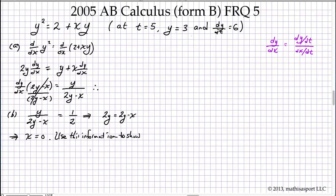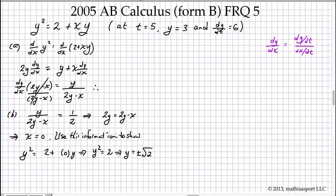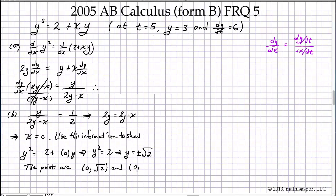We use this information back in the original equation to show that y² equals 2 plus 0 times y, so y² equals 2, which further implies y equals plus or minus the square root of 2. It's important to note that both the positive and the negative square root of 2 satisfy this equation.